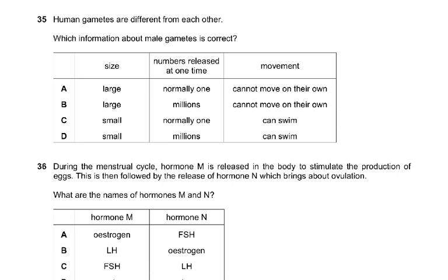Question 35: Which information about male gametes is correct? D, because the size of the male gamete, the sperm, is like this but the ovum is bigger. So they're small and they're producing millions and they can swim.